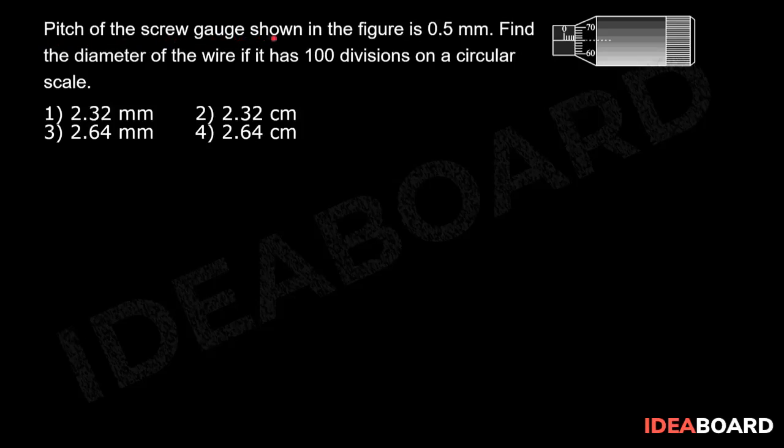Pitch of the screw gauge shown in the figure is 0.5 mm. Find the diameter of the wire if it has 100 divisions on circular scale.